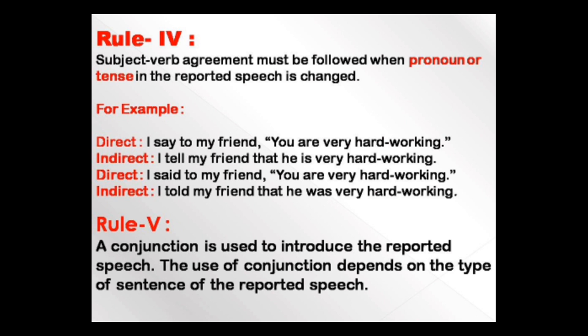Subject-verb agreement must be followed when a pronoun or tense in the reported speech is changed. For example: 'I say to my friend, you are very hard working.' 'You' changes according to the object — 'my friend' — so the indirect speech is: 'I tell my friend that he is very hard working.' We use 'is' with 'he,' not 'are.' If it were past tense — 'I said to my friend, you are very hard working' — it becomes: 'I told my friend that he was very hard working.' The helping verb 'was' is used with 'he' in past tense.